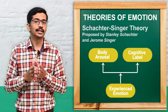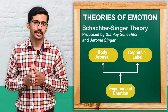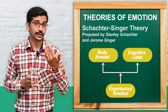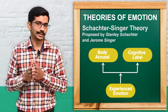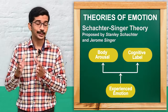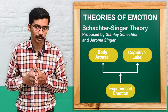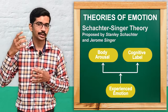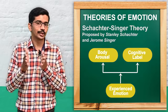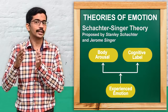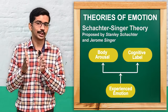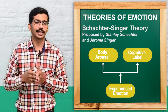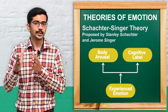The third theory is the Schachter-Singer theory, put forward by Stanley Schachter and Jerome Singer. According to them, emotional experience is a result of our cognitive level. The cognitive level refers to the cognitive appraisal — an examination of the emotional situation that happens in our brain. As a result of cognitive appraisal and physiological changes or body arousal, we experience the emotion. That is the concept given by the Schachter-Singer theory.